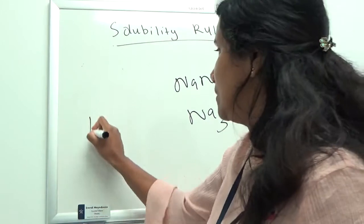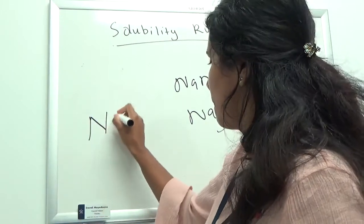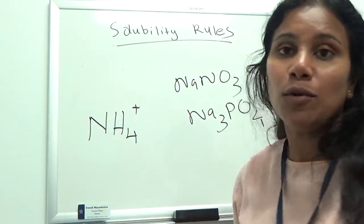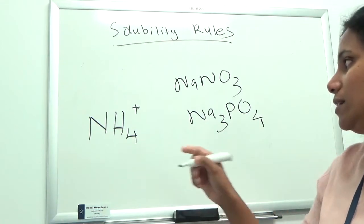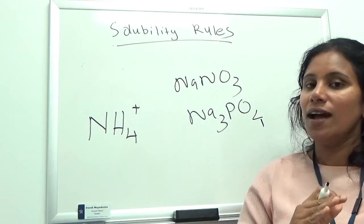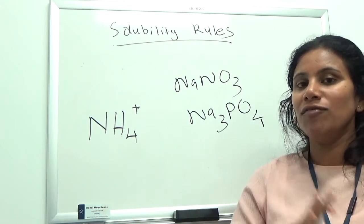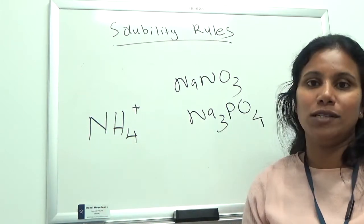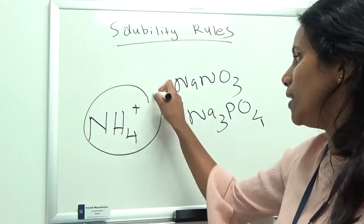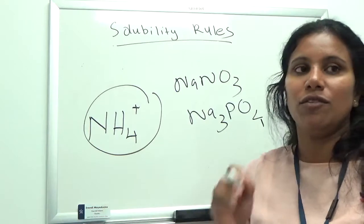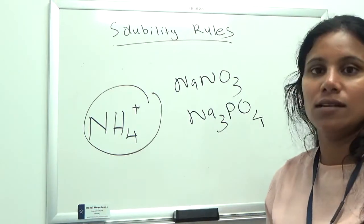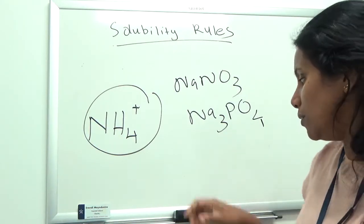There is another important cation — ammonium (NH4⁺). If your compound has ammonium, regardless of the anion, your compound is soluble. So now, keeping that in mind, we'll look at the insoluble anions.